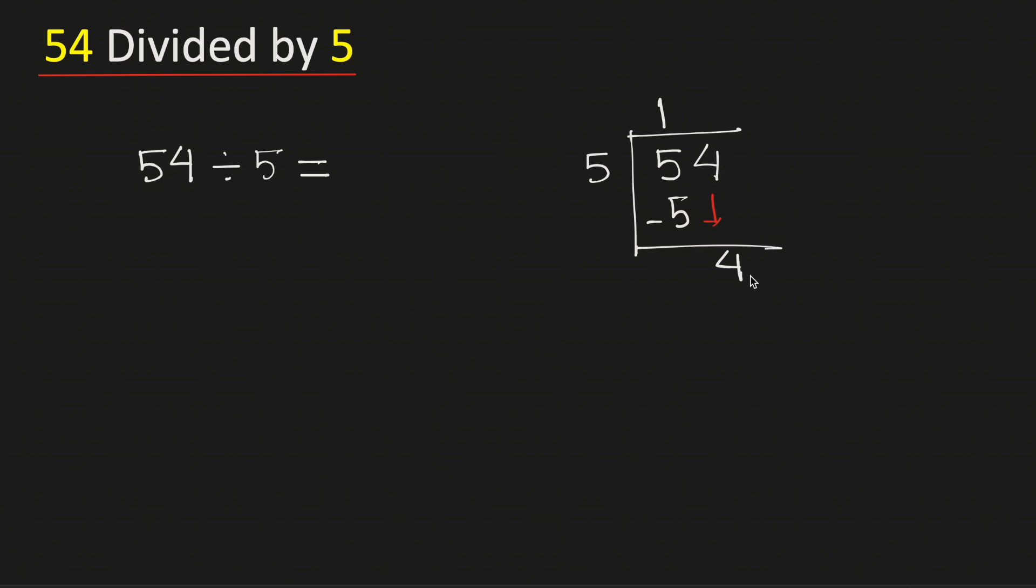As we have brought down this number here, so we need to divide it. We know that 5 goes into 4 by 0 times and 5 times 0 is 0. Subtract, we get 4.